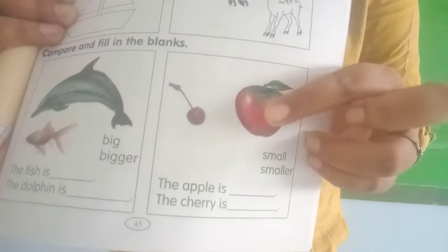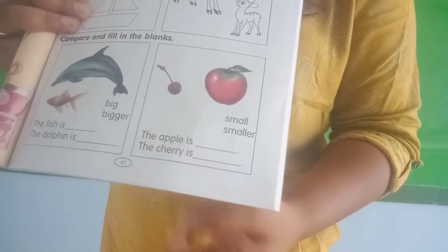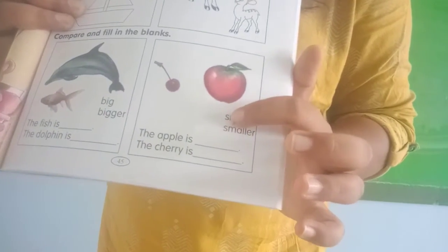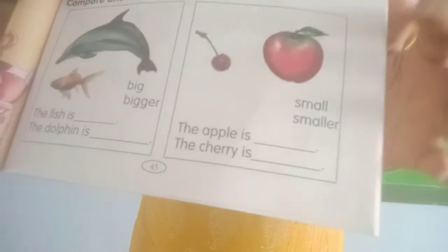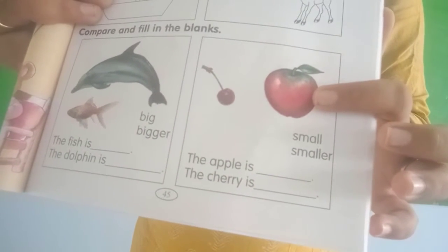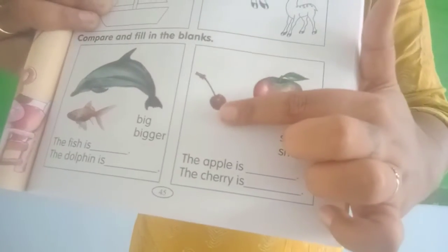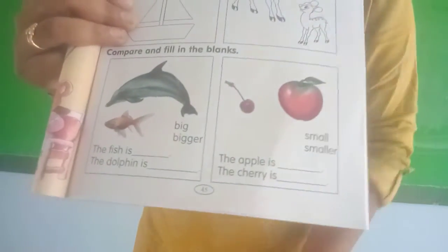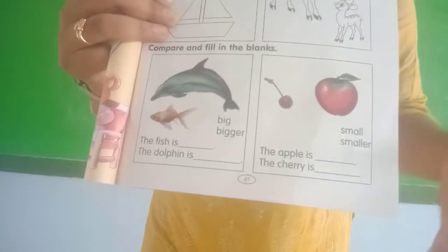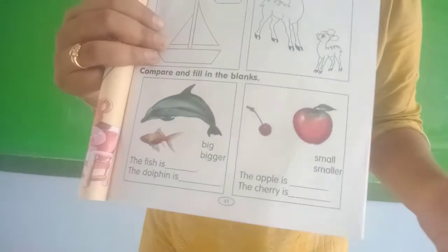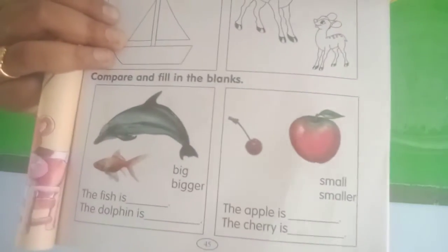And here you can see apple and cherry. The apple is small. The cherry is smaller — it's too small. Here also you can find the difference between smaller and small. The apple is small, the cherry is smaller. We can call it smaller because it's too small.